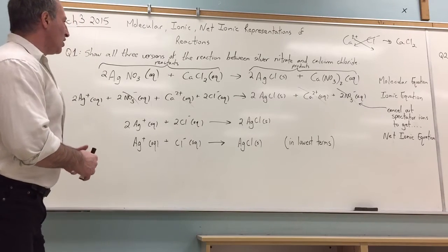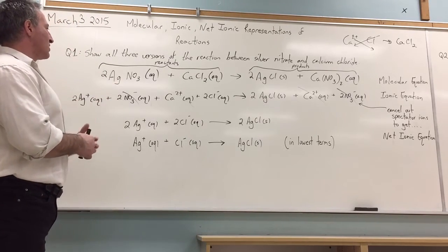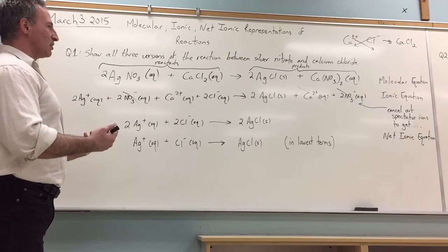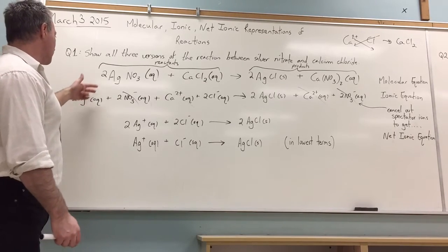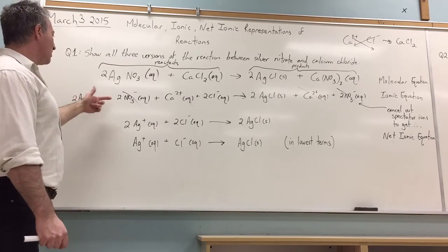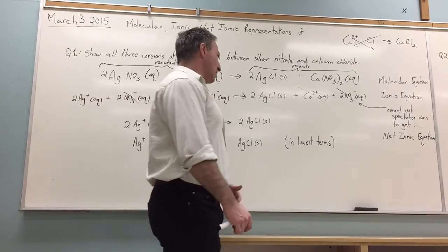In the ionic equation, you show how the substances break up in aqueous solution to form ions. So we see the silver forming an aqueous ion. The nitrate is aqueous, the calcium is aqueous, the chloride is aqueous.